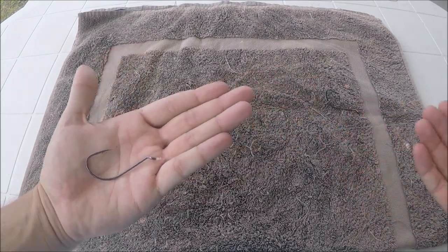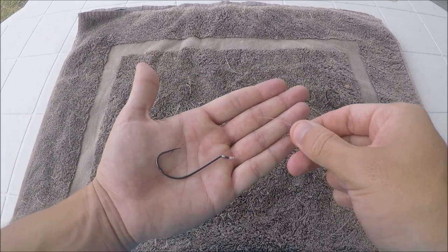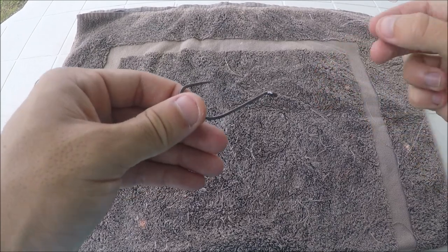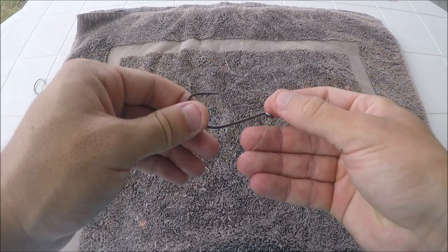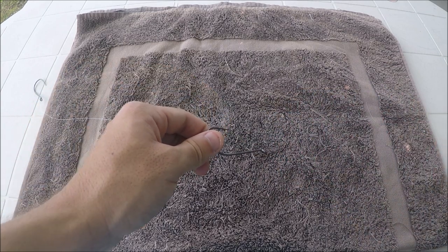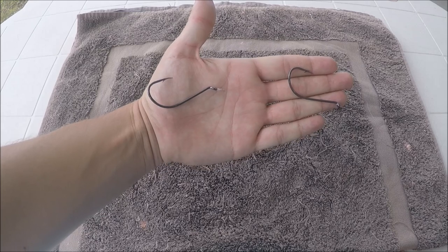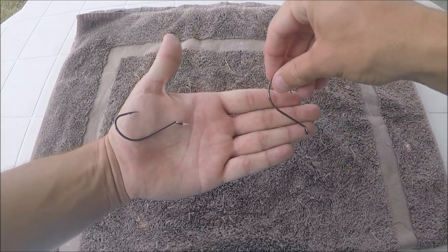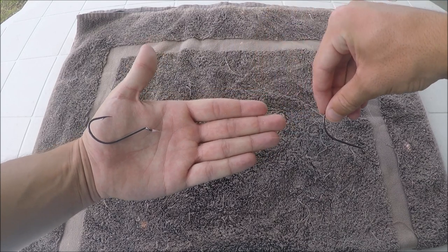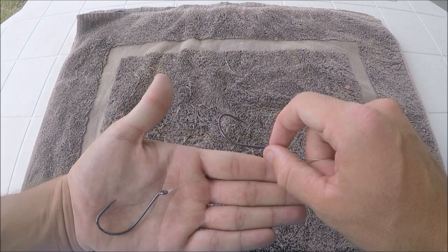Now we're going to grab the other end of the leader, the top there, and thread this up through the eye with that hook there. Now depending on the size of your bait will determine how far apart these are. So if it's a bigger bait obviously they'll be further apart. If it's a smaller bait they'll be closer. Obviously these hooks are massive just to show you guys.